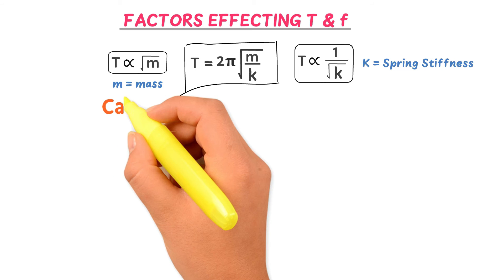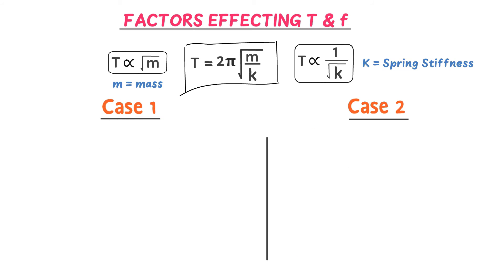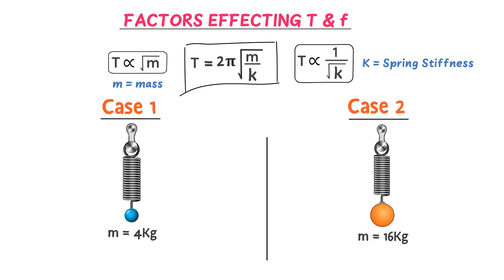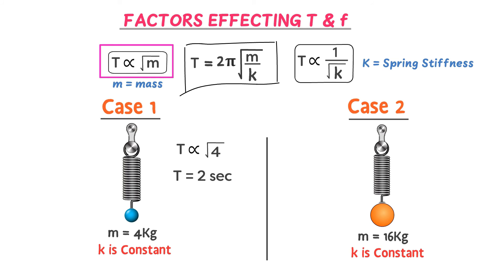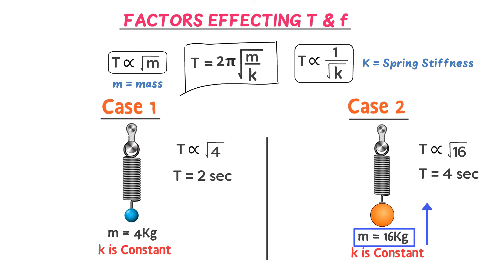Consider two cases. In Case 1, a 4 kg mass is attached to an elastic spring. In Case 2, a 16 kg mass is attached, with K constant in both cases. Since T is directly proportional to √M: in Case 1, T ∝ √4, giving T = 2 seconds; in Case 2, T ∝ √16, giving T = 4 seconds. Therefore, increasing the mass increases the time period.